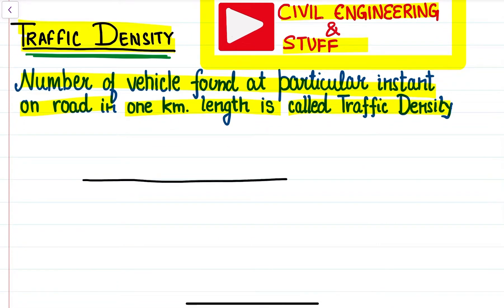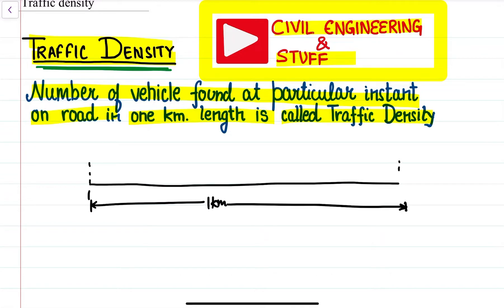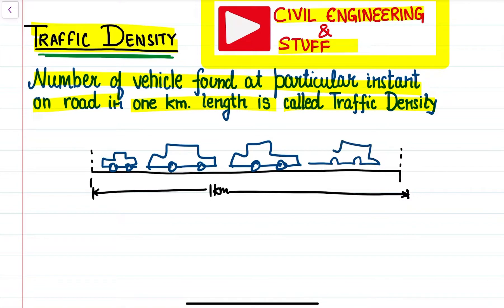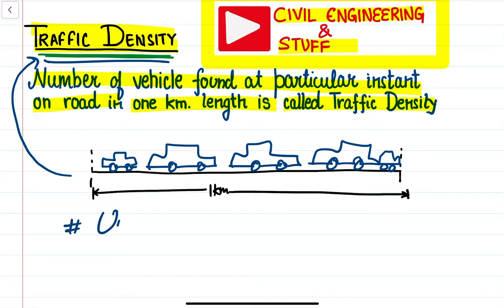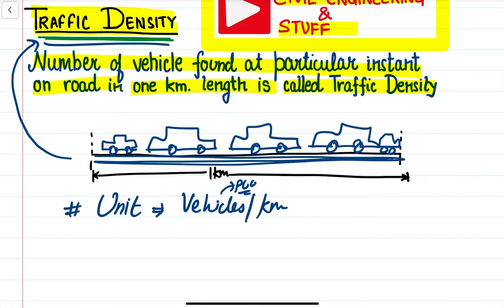This means that in a steady stretch of one kilometer, how many vehicles are occupying this section of the road — that is what we call traffic density. The unit of traffic density will be vehicles per kilometer, or vehicles in PCU.